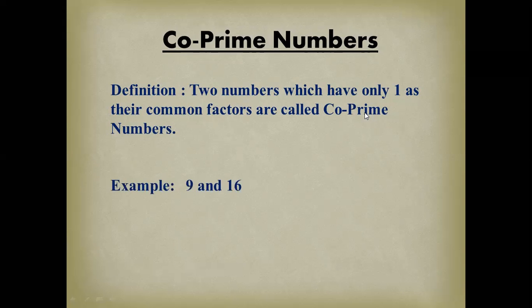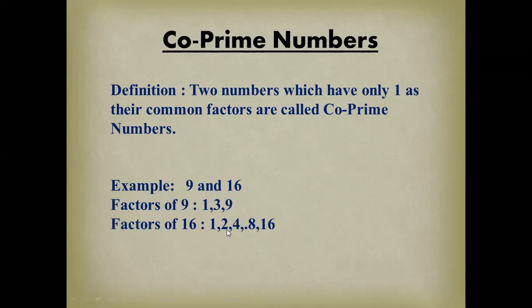Let me show you an example. There are two numbers: nine and sixteen. First we find the factors of nine — those are one, three, and nine. Then we find the factors of sixteen — those are one, two, four, eight, and sixteen.